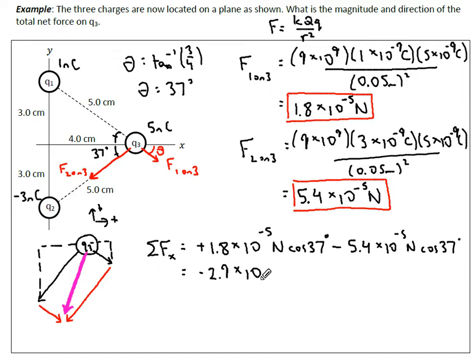Now we look at the sum of the forces in the y direction. For this one they're both going downwards. Up is positive, so negative 1.8 times 10 to the negative 5 Newtons sine component. We have minus 5.4 times 10 to the negative 5 Newtons sine 37. We end up with negative 4.3 times 10 to the negative 5 Newtons.